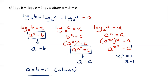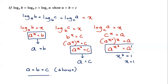For the second log, b^x = c; substituting b = a^x gives a^(x²) = c. Still couldn't solve because a and c are different bases. So I proceeded to the third log.